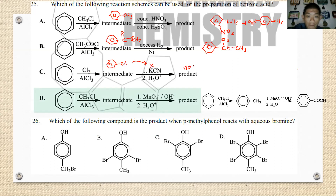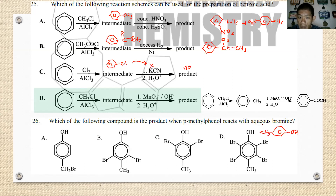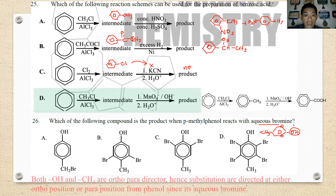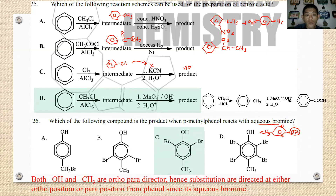Number twenty-six: which compound is the product when p-methylphenol reacts with bromine? Paramethylphenol has an OH and a CH3 on the benzene ring. Because we are using aqueous bromine — not bromine in FeBr3 — only positions ortho and para relative to the OH group will react. The best answer is C.